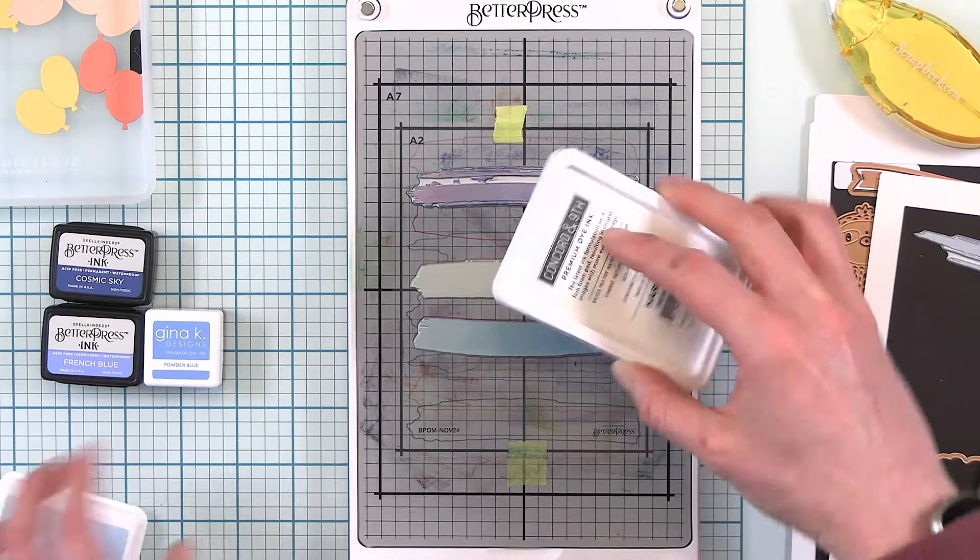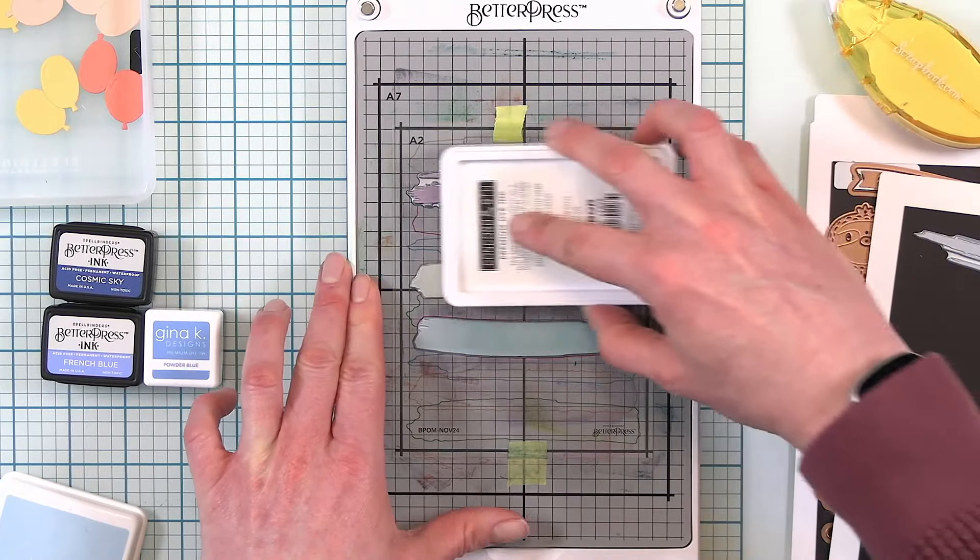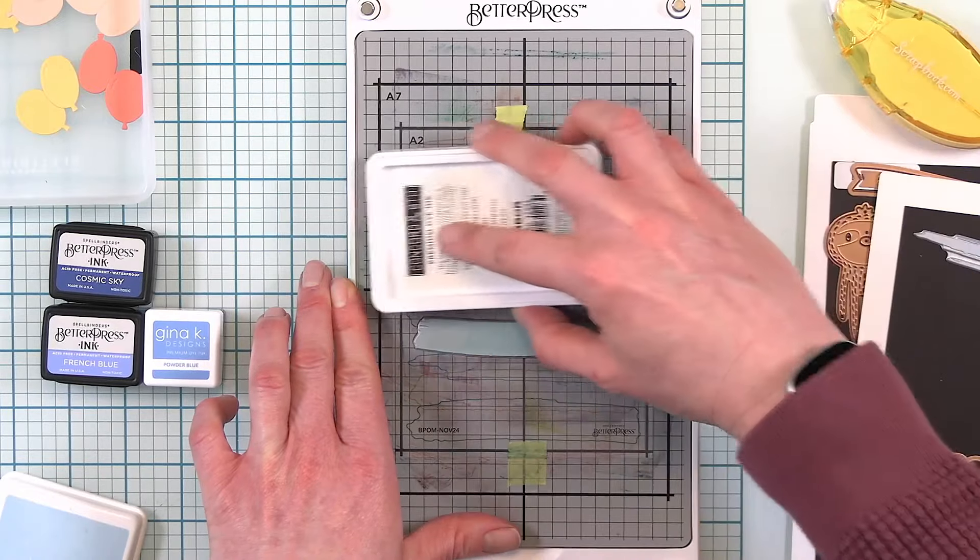Now I'm starting out with Concord and 9th Harbor. Now this has a foam applicator and I found that when you're using foam application with your ink it's better to swipe it across.